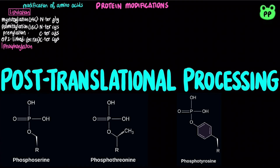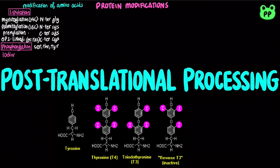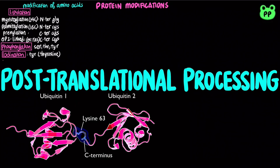Phosphorylation usually occurs at serine, threonine, and tyrosine residues. It is essential to enzyme regulation. Iodination occurs at the tyrosine residue and is an important step in the formation of the thyroid hormone thyroxine. Ubiquitination refers to the addition of the protein ubiquitin, usually at the lysine residue, which targets a protein for degradation, which will be discussed in a moment.